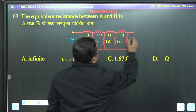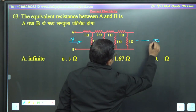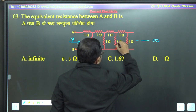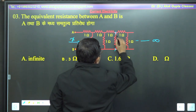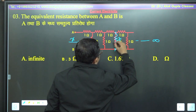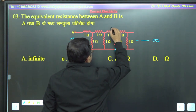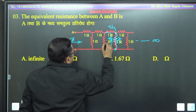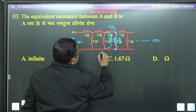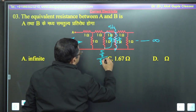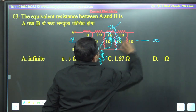जैसे यहाँ पर अगर मैं देखूँ — infinity तक नहीं जाना। एक trick: 1 plus 1 = 2, 2 के साथ 1 connect हो गया parallel में, तो यह हो गया 2/3। इन सब के बीच में एक resistance लो — 2/3 plus 1 = 5/3। यह 5/3 है, 5/3 in parallel with 1 — 5/3 divided by (5/3 + 1) = 5/3 divided by 8/3 — यह cancel, तो it is 5/8।